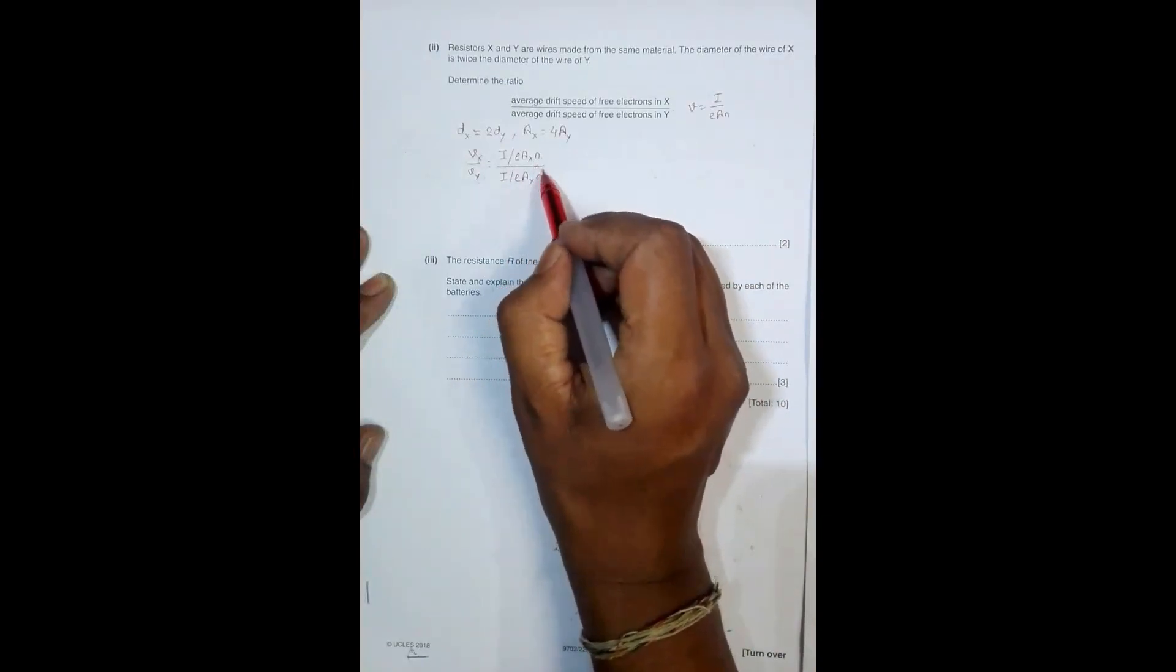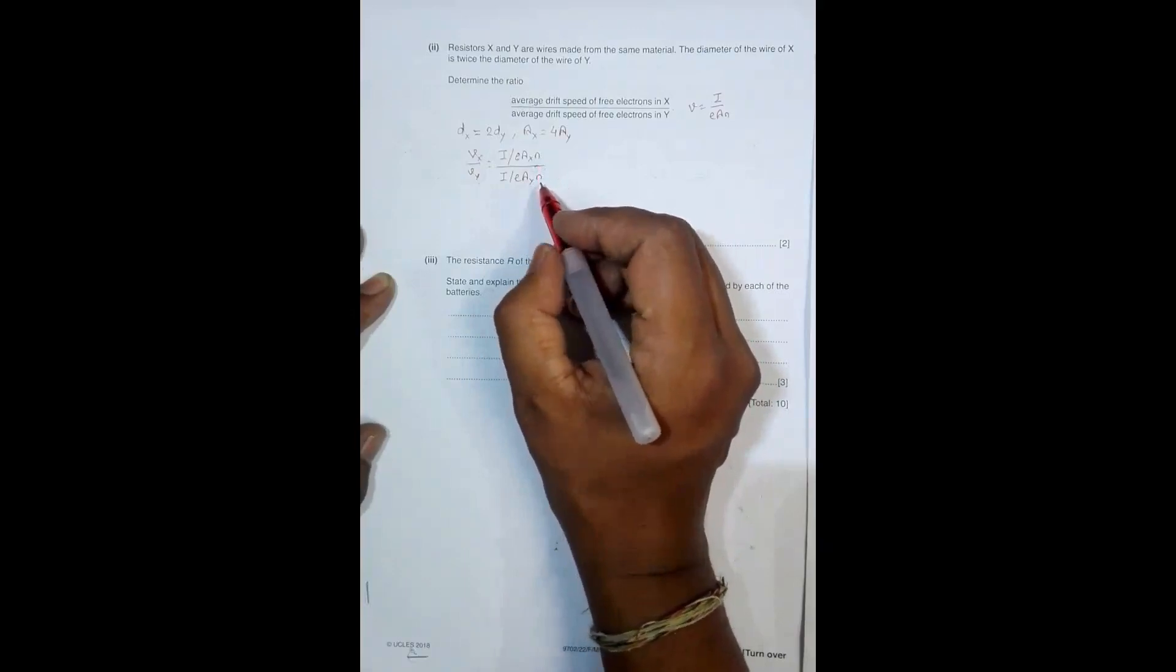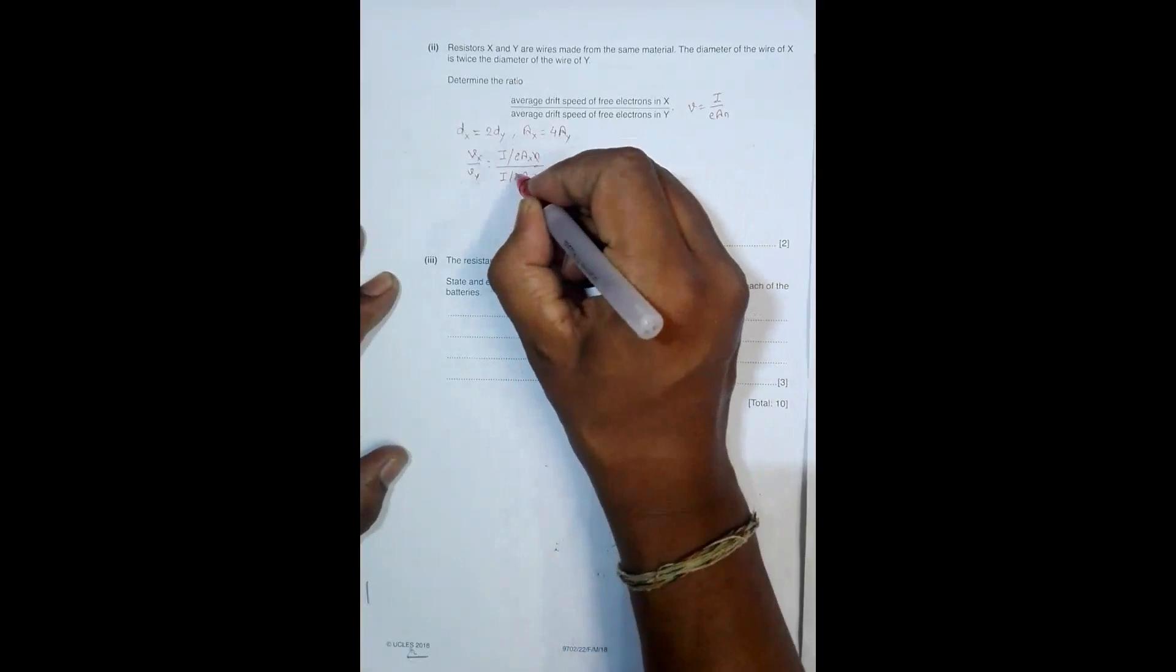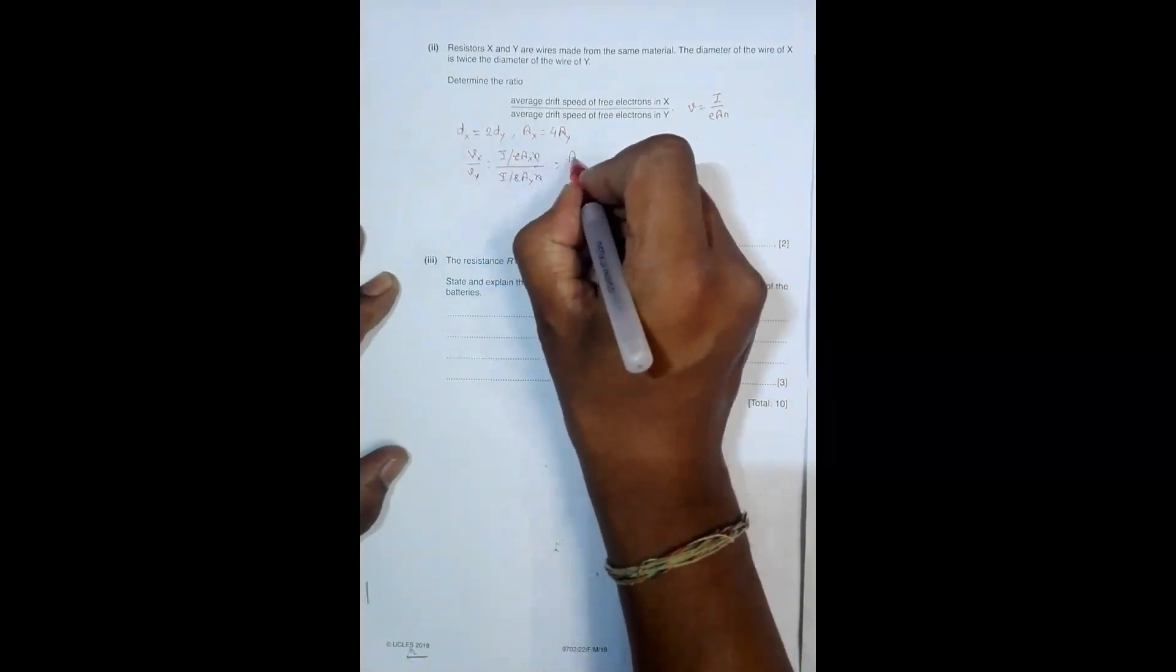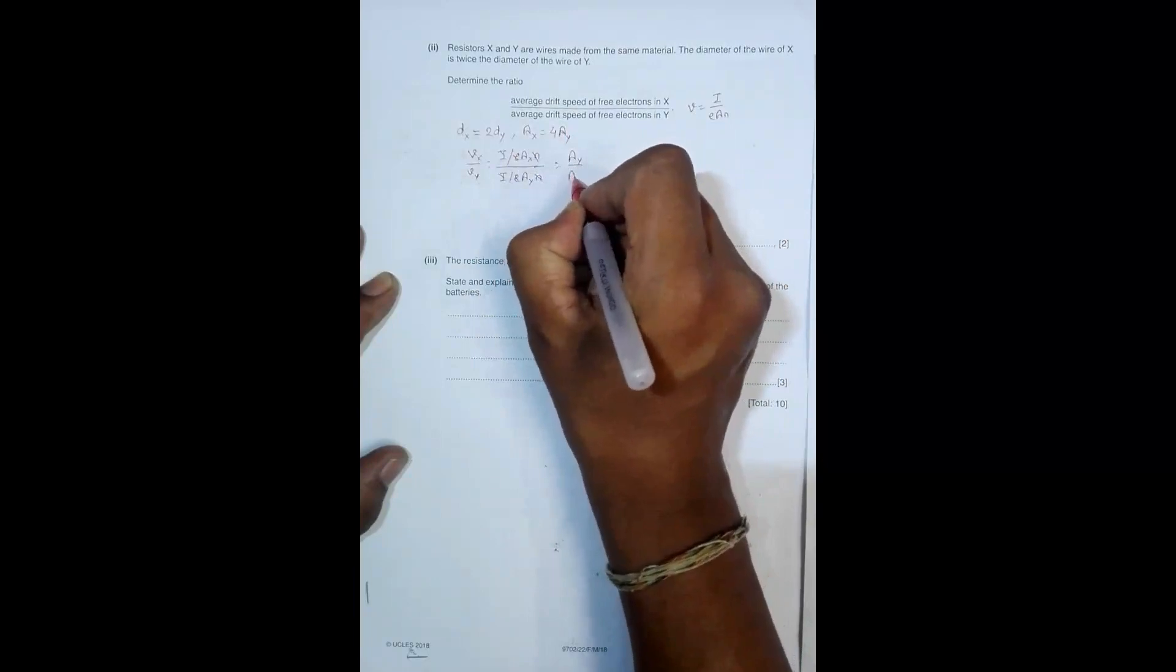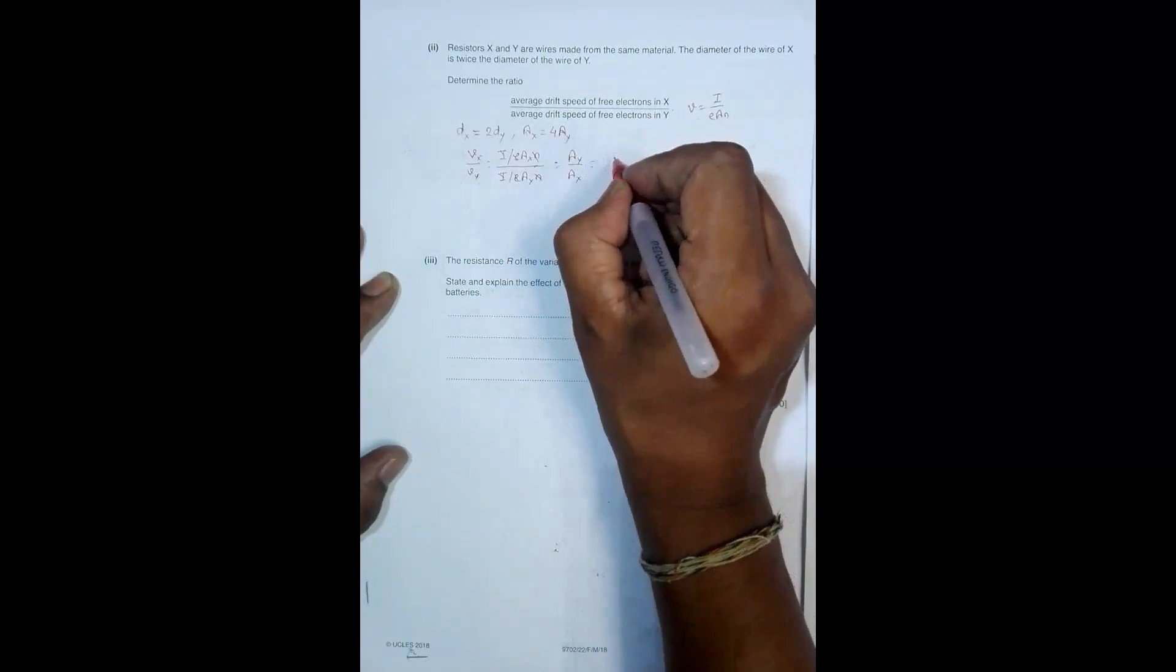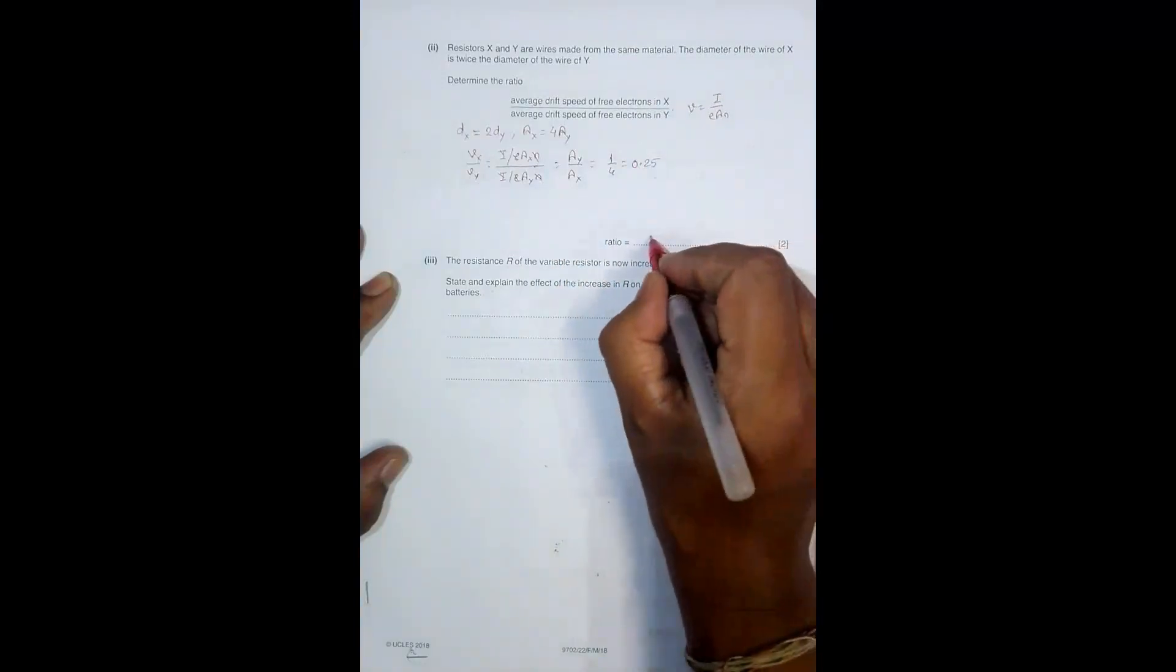The number of free electrons per cubic meter, the free electron density, is also the same. So we can cancel these terms and it will simply be A_Y by A_X, which equals 1 by 4, which equals 0.25. So the ratio should equal 0.25.